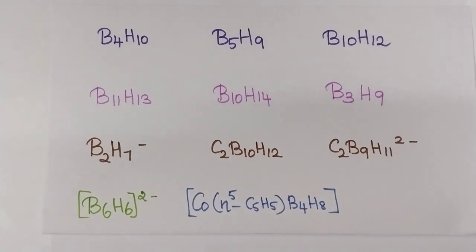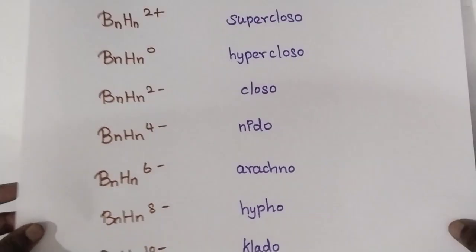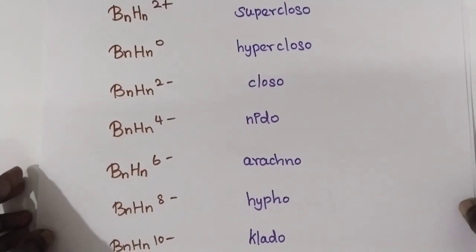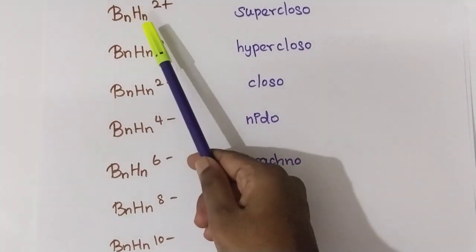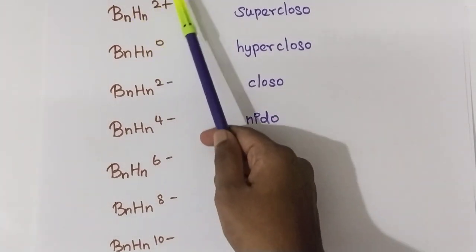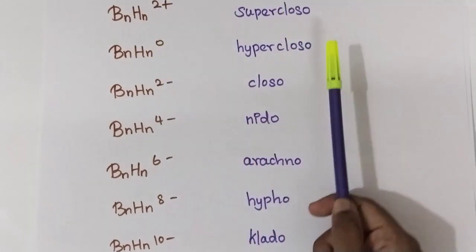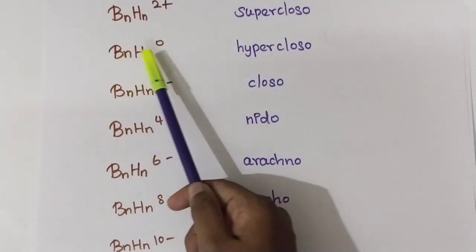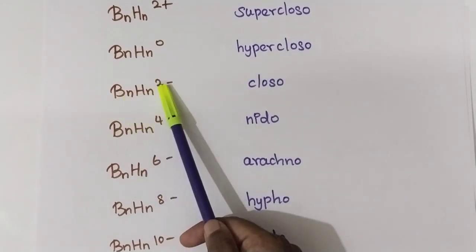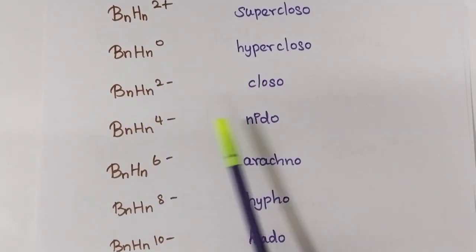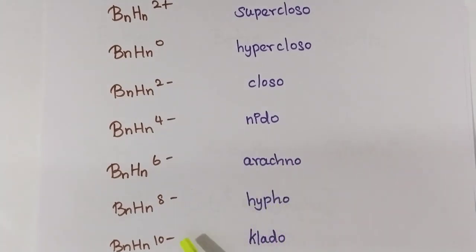First of all, how we have to predict the structure for these boranes? If you are having a borane in the format BnHn 2+, then it is super-closo. If it is BnHn power 0, it is hyper-closo. And if it is BnHn 2 minus, then it is closo. For 4 minus it is nido, 6 minus is arachno, 8 minus is hypo, and 10 minus it is clado.